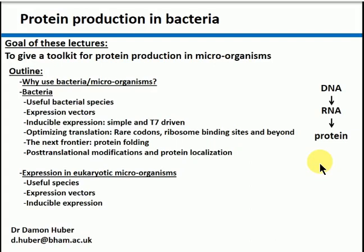Part of producing the protein — the central dogma brings you from DNA to a polypeptide, but it doesn't actually give you a functional protein necessarily. There may be further steps beyond making the polypeptide to get a functional protein. I was told by a friend at New England BioLabs that the next frontier in biotech, in terms of helping people make more protein, is really protein folding.